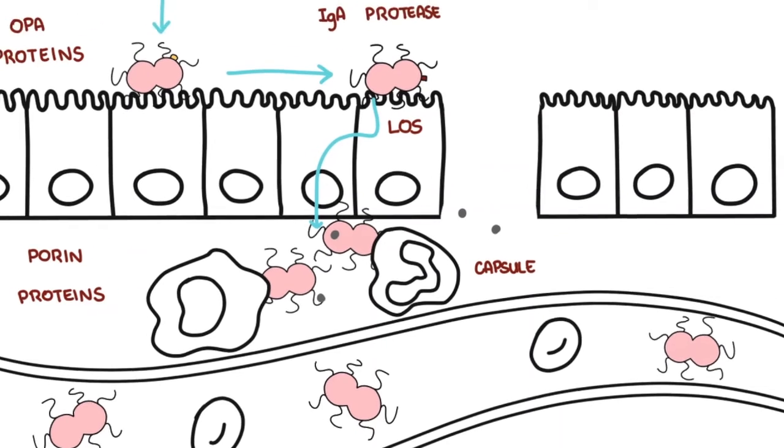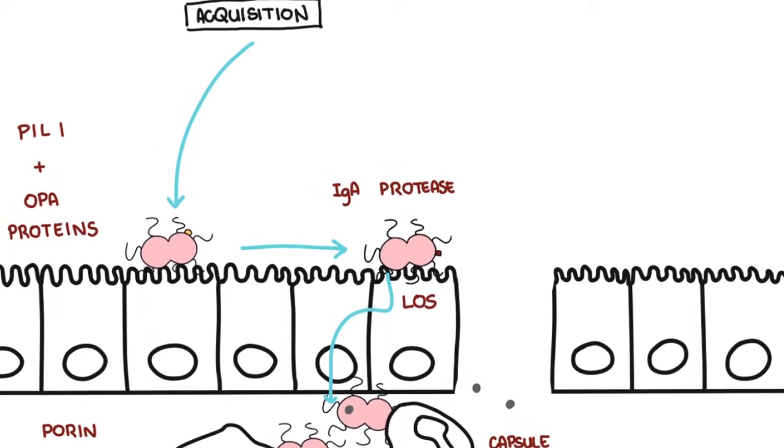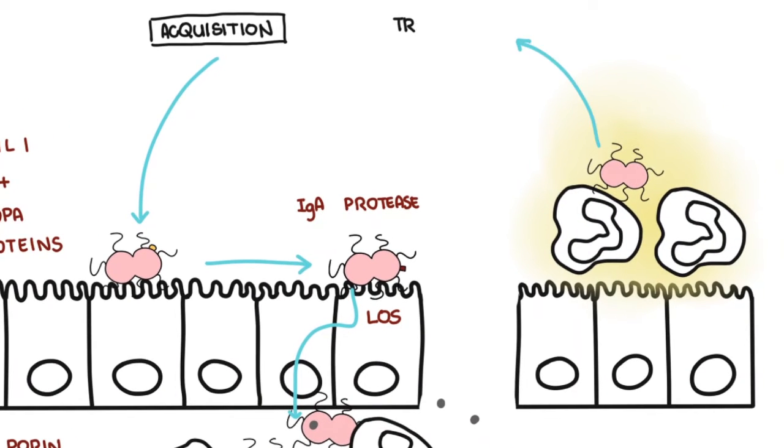Mucosal invasion by Neisseria gonorrhea results in a local inflammatory response that produces a purulent exudate. Transmission can subsequently occur to another patient through sexual contact. Lipooligosaccharides attach to sperm cells and likely lead to transmission from males to uninfected sexual partners.